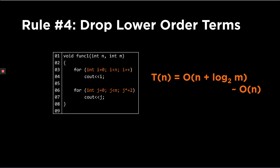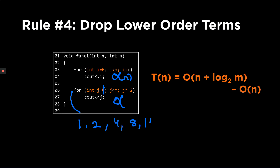The final rule is the rule of dropping lower order terms. We have already seen that different functions grow in different ways. Here I have two loops: the first runs from 0 to n minus 1 so its complexity is O(n). The other runs with j starting at zero, but it grows much faster — exponentially — because you are multiplying the number by two at every iteration. Note there is a typo: the loop should run from one to n, otherwise the multiplication wouldn't work.